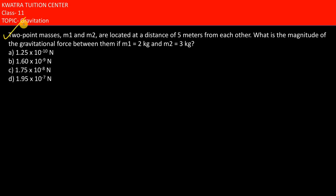The next problem: two point masses M1 and M2 are located at a distance of 5 meters from each other. R is 5. What is the magnitude of the gravitational force?